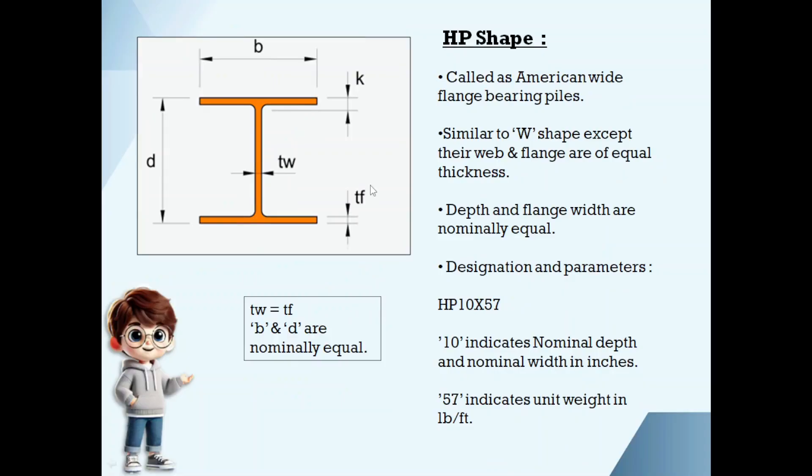HP are also called as American wide flange bearing piles. Similar to W shape, these also have parallel inner and outer flange surfaces. The differences are: web thickness and flange thickness both are same for HP shape, and depth and width of the cross section are nominally equal. If you take HP 10 by 57, depth and width are nominally 10 inches, 57 is the weight.